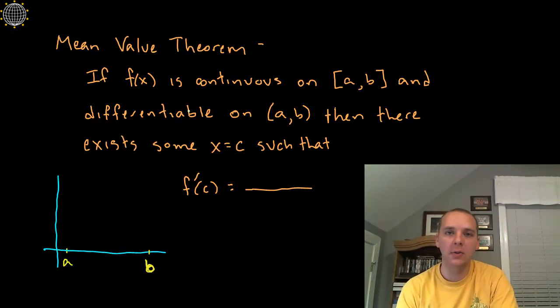If your function is continuous on a closed interval from a to b and it's differentiable on that same open interval from a to b, then there has to be a point x equals c such that something happens. I'm going to write it here in a second, but rather than just give it to you, let's see if we can kind of figure it out.